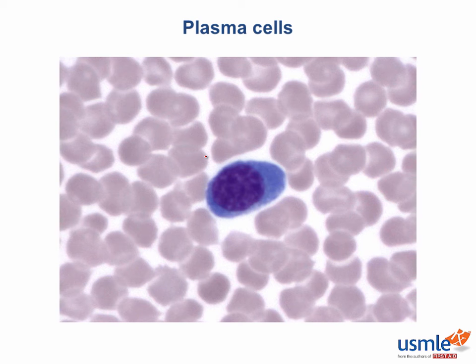As you can see here, plasma cells have an off-center nucleus, which is sometimes described as a fried egg appearance. Other features include chromatin in a clock-faced distribution — you can imagine the numbers on the outer edge of the nucleus, representing heterochromatin that is condensed and placed at the outer edge.